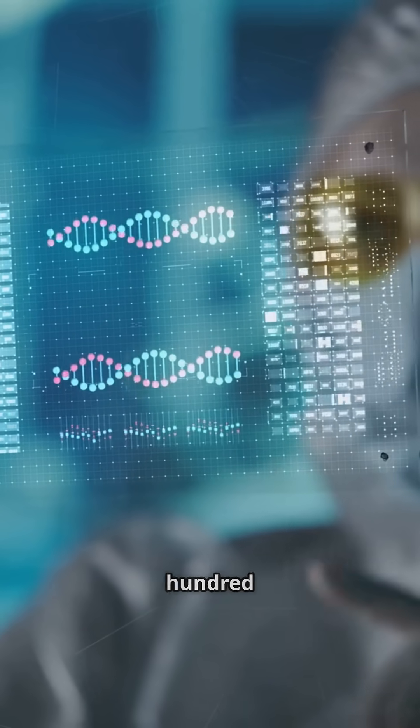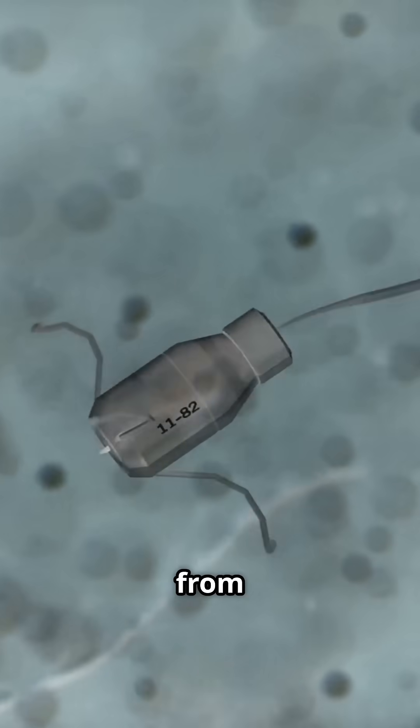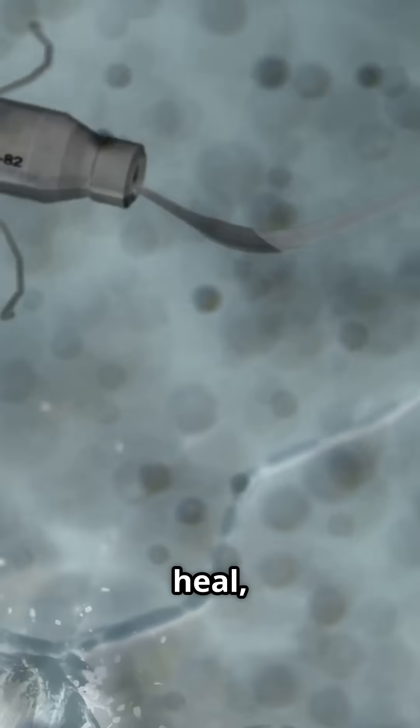Google's quantum computer solved a problem in 200 seconds that would take a supercomputer 10,000 years. Scientists built tiny robots from frog cells, xenobots. They move, heal, and reproduce.